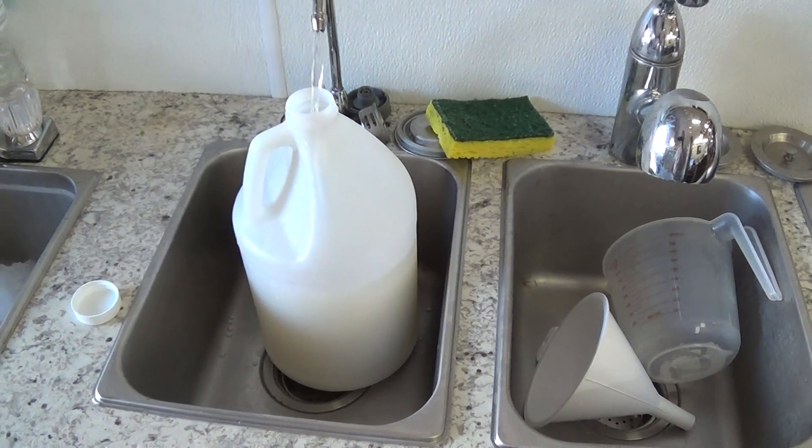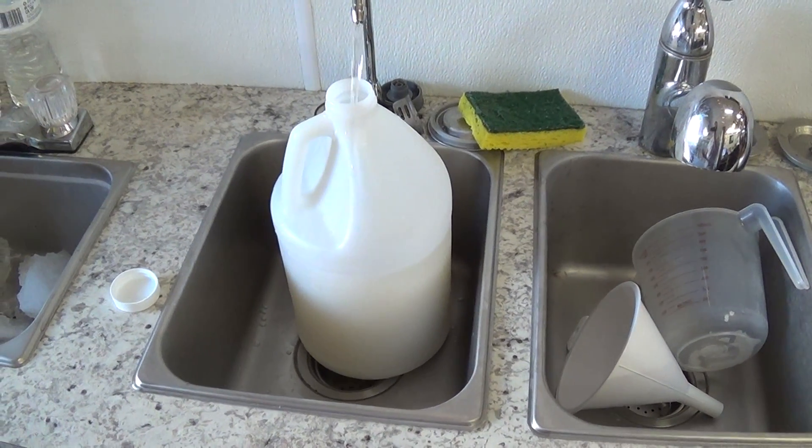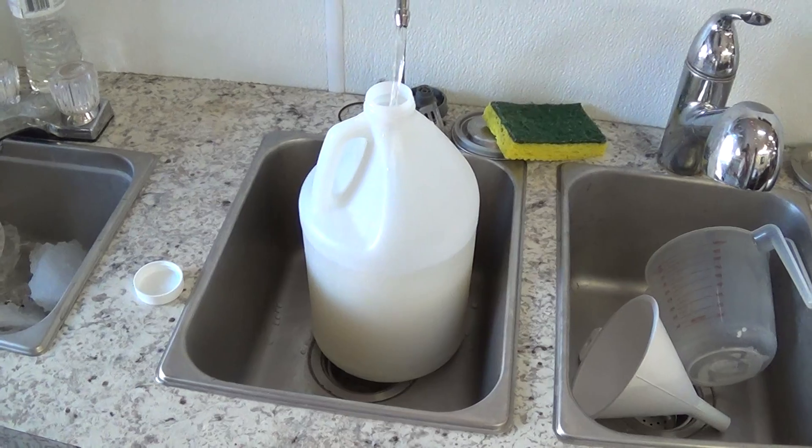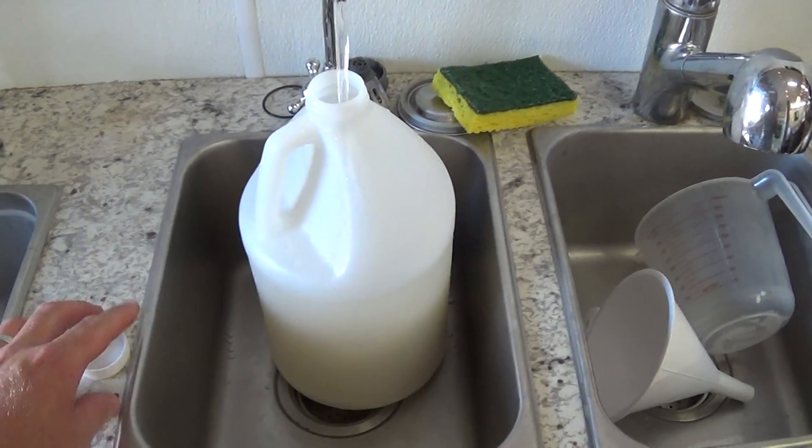So it takes 10 cups of sugar, an ounce of sodium benzoate, and a fourth of an ounce of citric acid to make a gallon of simple syrup.